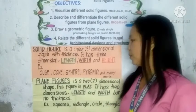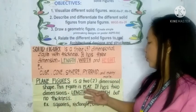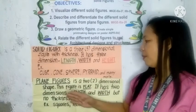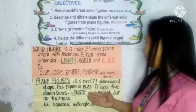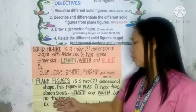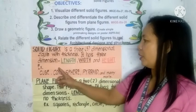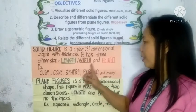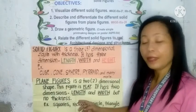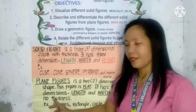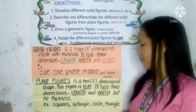Now let's move to the plane figure. What is a plane figure? A plane figure is a two-dimensional shape. This figure is flat. Take note: it has two dimensions — length and width. Going back to solid figures, those have three dimensions: length, width, and height. Plane figures have only length and width, but no thickness.